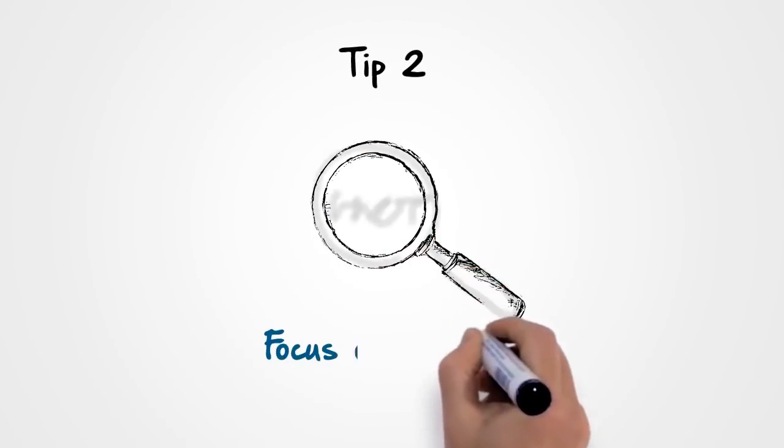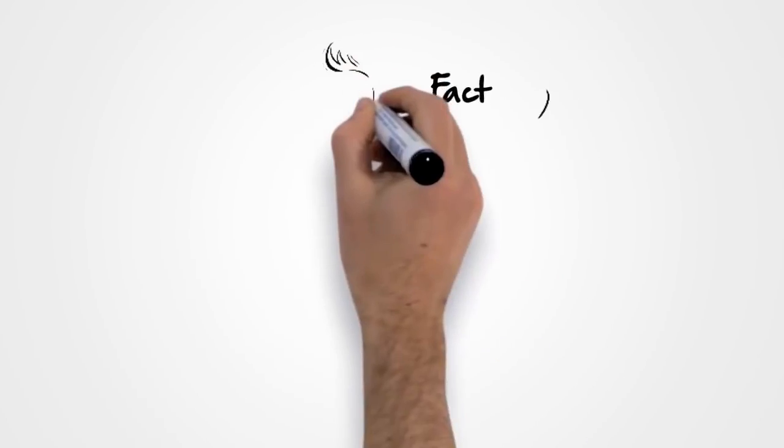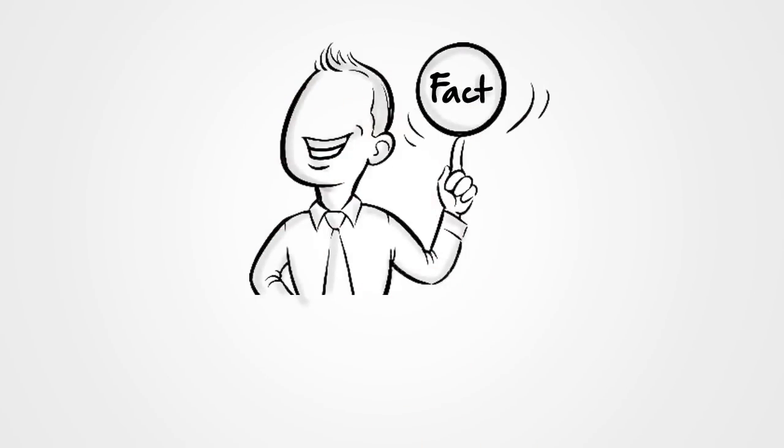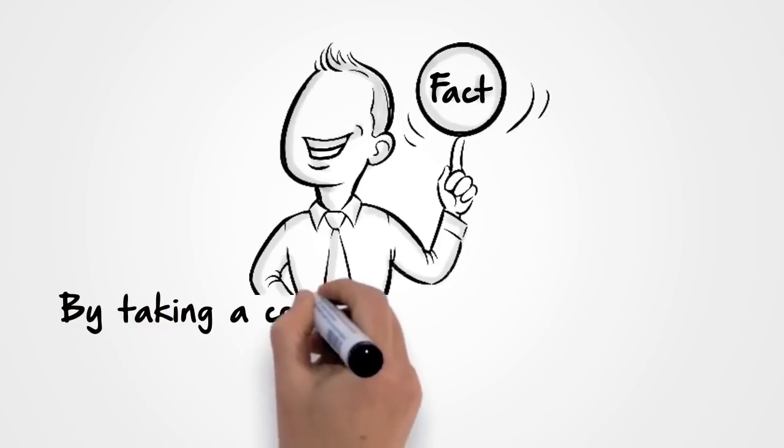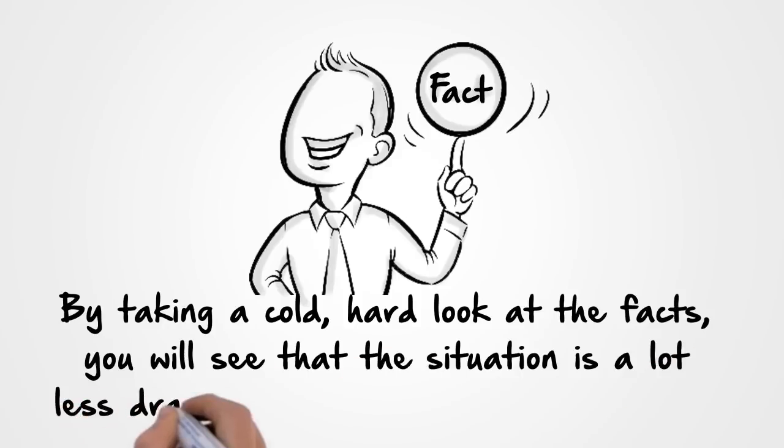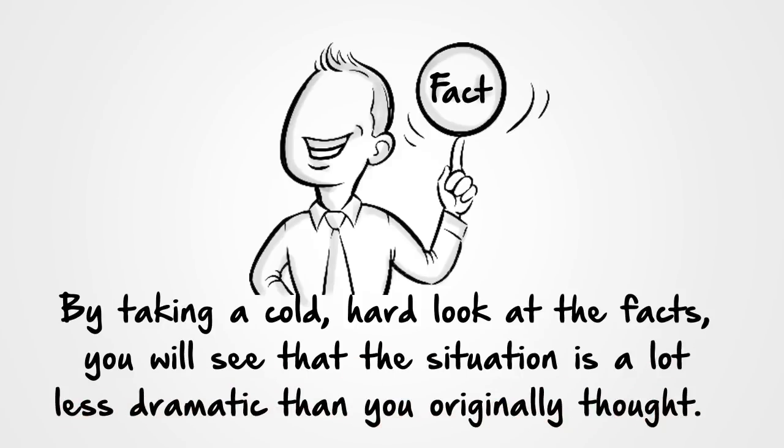Tip 2: Focus on the facts. When something happens that you don't understand or like, identify the facts that a fly on the wall would have seen. By taking a cold hard look at the facts, you'll see that the situation is a lot less dramatic than you originally thought.